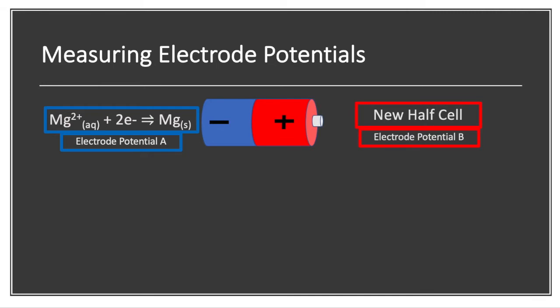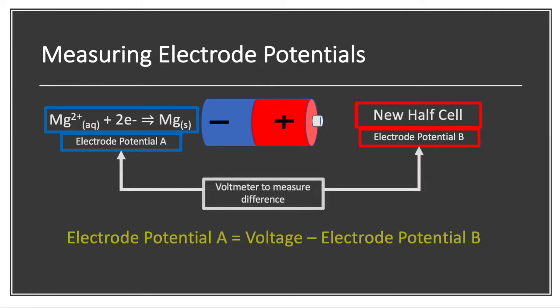So what can we use as our new half cell? The problem comes is, of course, as soon as I try and work out the electric potential of the magnesium, I need to know the electric potential of the half cell B to take away from the voltage. And unless we actually have that, it's impossible to do.